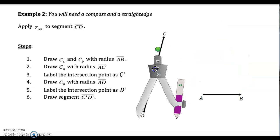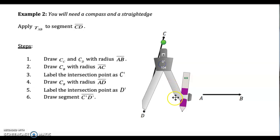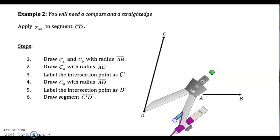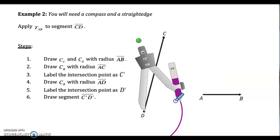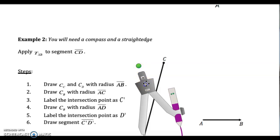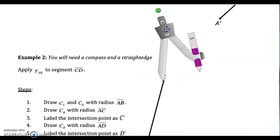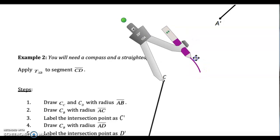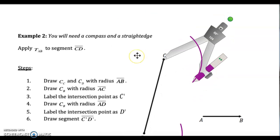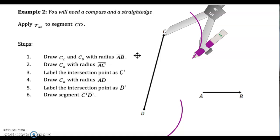So first step is I'm going to measure the length. You have to figure out the length that you're translating each point and the direction. Here's my length. So then I go to C and I go to D and I'm going to draw — now it says draw a circle. I know that I'm moving it to the left, so I really don't need the part of the circle that's going to go to the right. I'm going to come up here and do C. Same thing. So that's the first step.